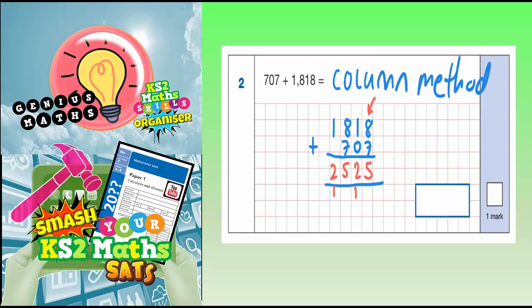So your final answer is 2,525. And you just need to pop that in your answer box. 2,525.